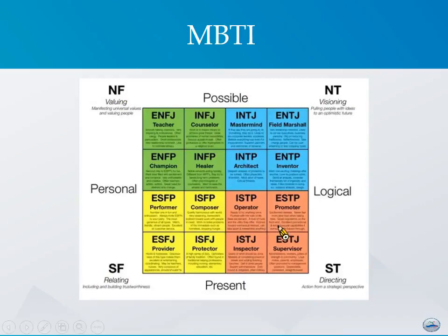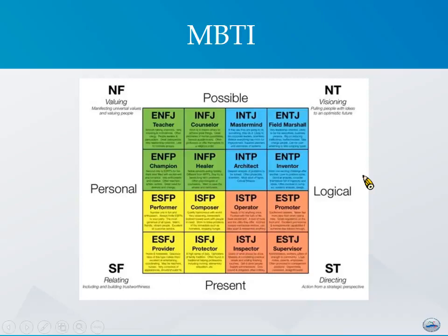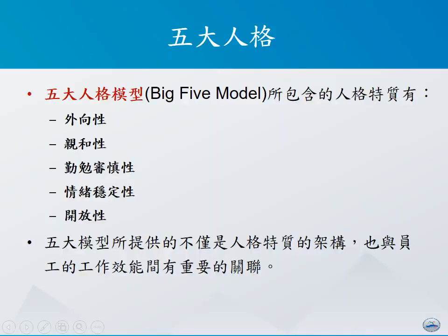进而组织起来成为这16种不大一样的人格。对于某些人来讲，他比较在乎的是现况；某些人比较在乎未来的可能性；某些人比较注重个人的感受；另外一些人则比较强调所有的事情一定要用逻辑的方式加以分析跟处理。五大人格模型则是另外一个常被用来讨论管理学里面人格特质的模型。